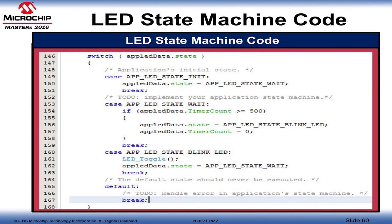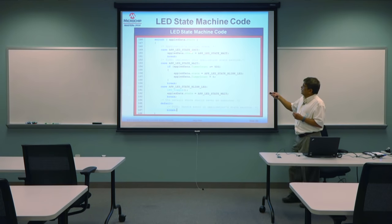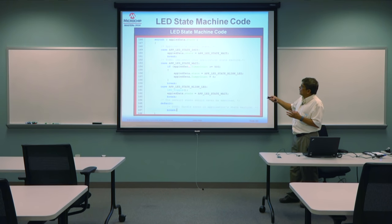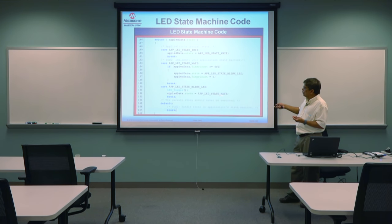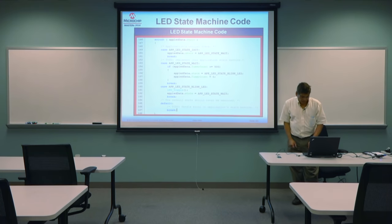For the LED state machine in code: switch(app_LED_state). In the init state, go to the wait state. In the wait state, check if the timer count is greater than or equal to 500 — if so, go to the blink LED state and zero the counter. In the blink state, toggle the LED and go back to the wait state. This state machine executes everything required for blinking the LED.